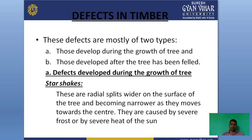The first defect develops when the tree is growing. Defects developed during the growth of a tree include star shakes — these are radial splits wider on the surface of the tree, becoming narrower as they move toward the center. They are caused by severe frost or by severe heat of the sun.